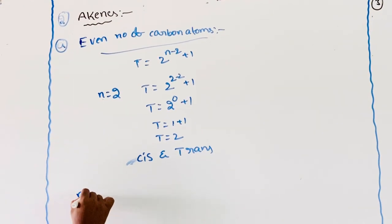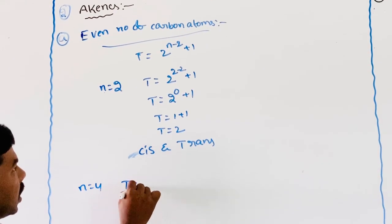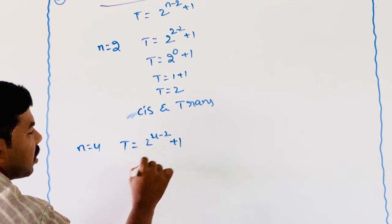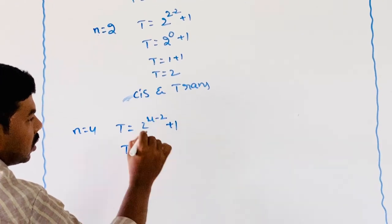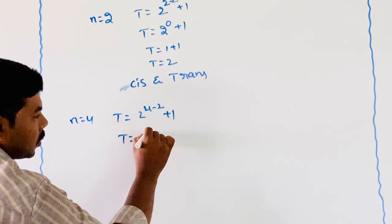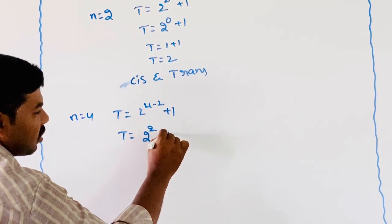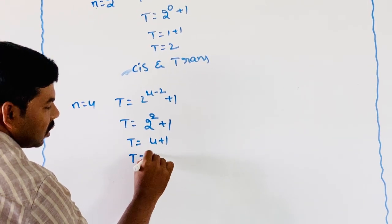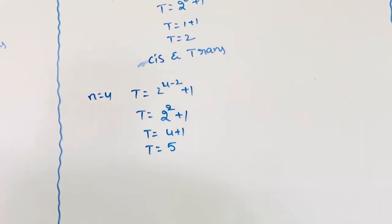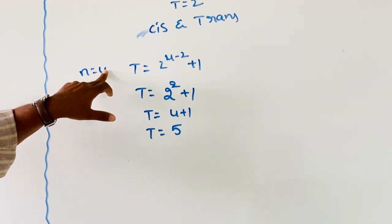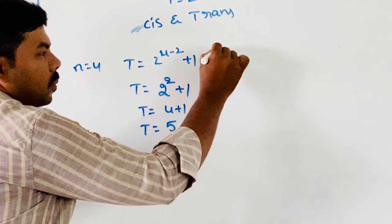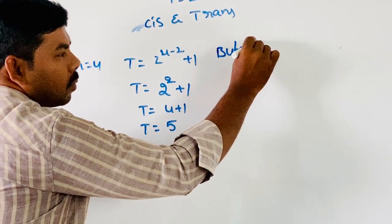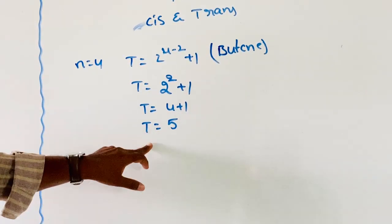For n = 4 (butene), T = 2^(4-2) + 1 = 2^2 + 1 = 4 + 1 = 5 isomers. Total number of isomers for butene is 5.